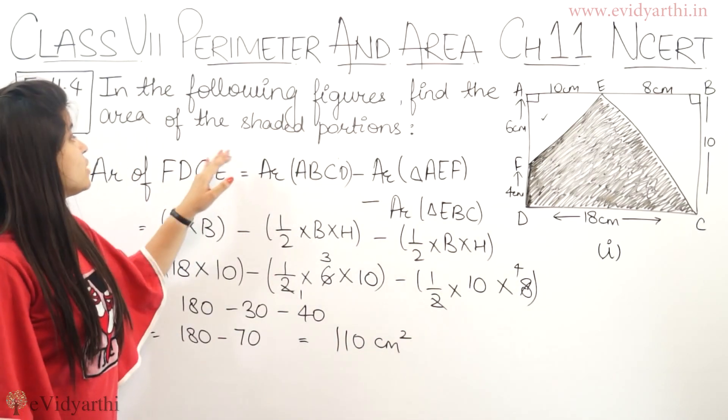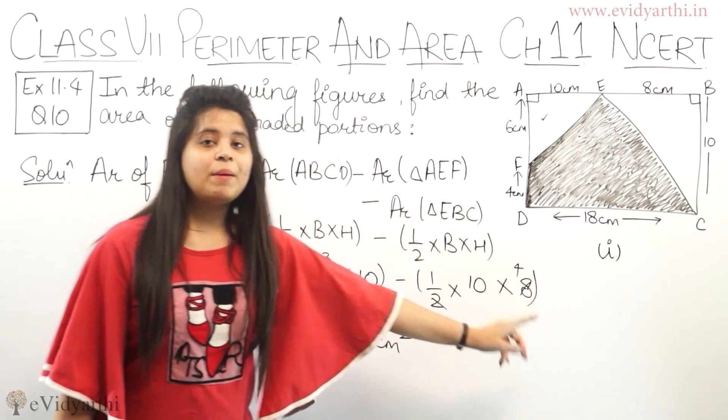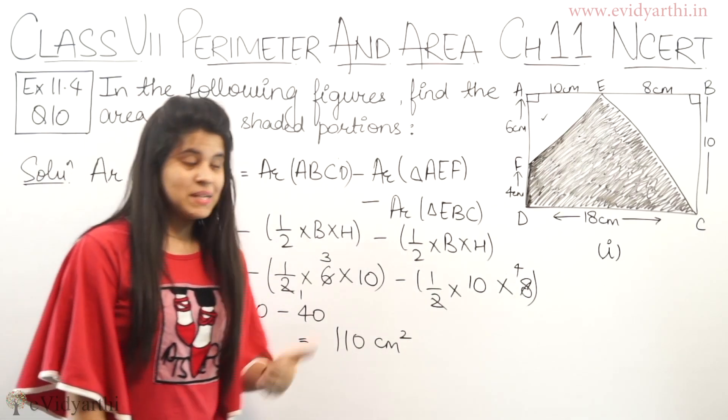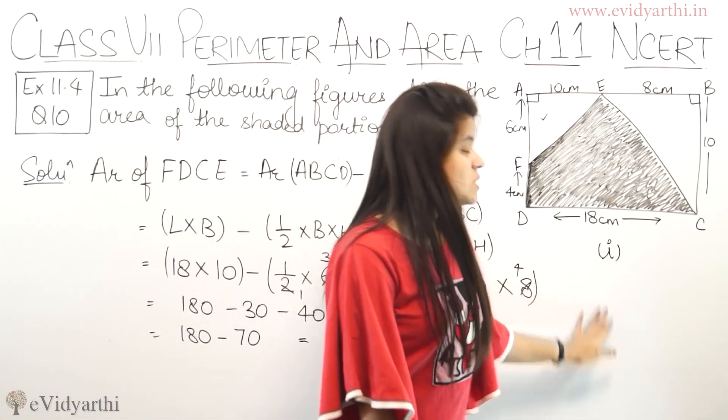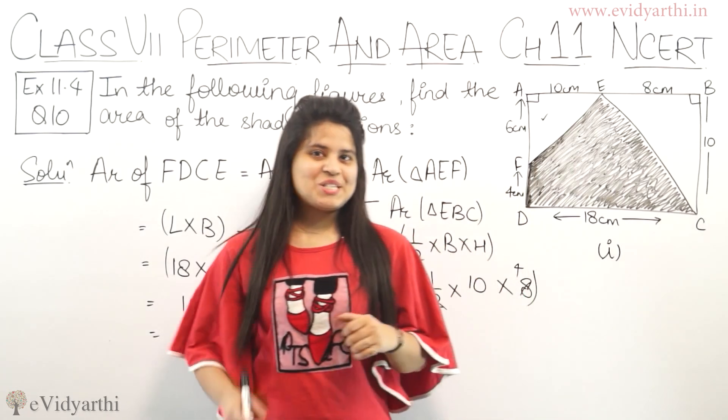180 minus 70 will be 110 cm square. So the area of shaded portion is 110 cm square. This was the first part.